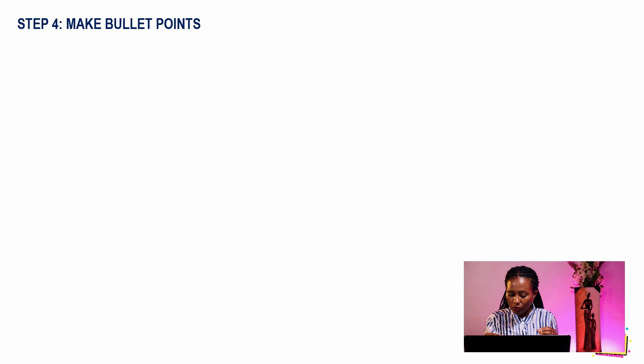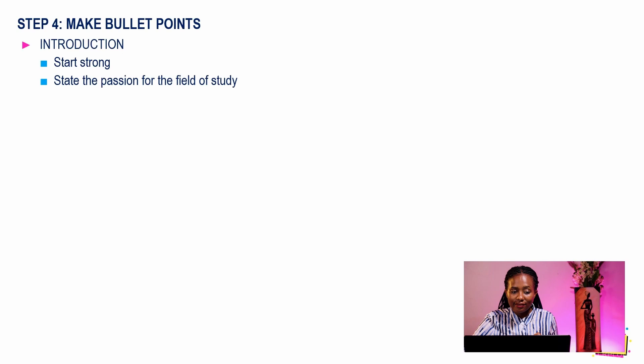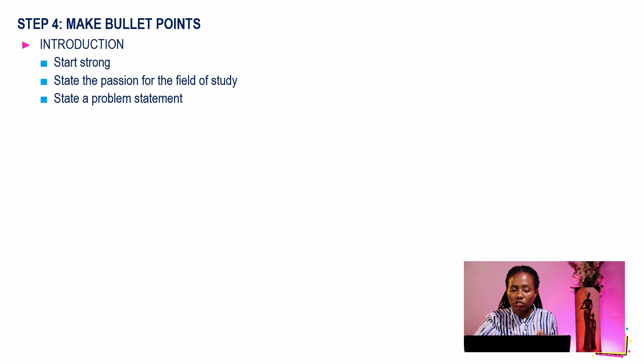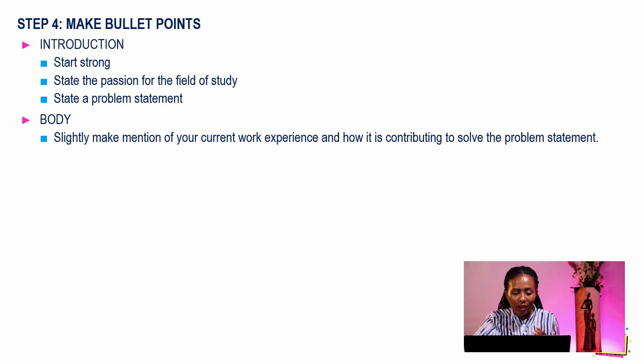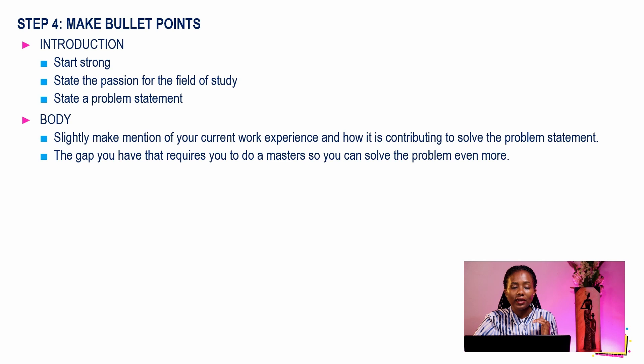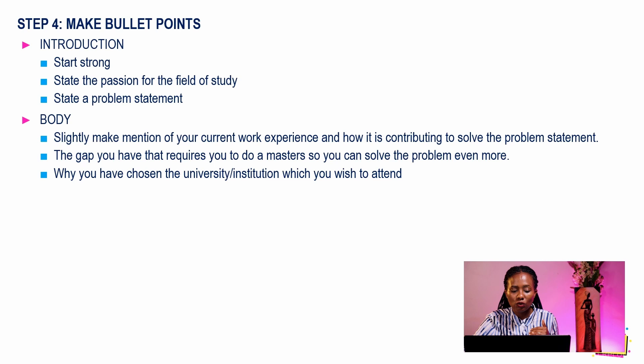For step four, make bullet points. For the introduction, start strong: state the passion for the field of study you have identified, then include a problem statement. A problem statement identifies your concern or passion in this particular field. For the body, slightly mention your work experience and how it contributes to solving that problem statement from the introduction, then identify the gap that requires you to do a master's degree so you can solve the problem even more. Then state why you have chosen the university or institution.